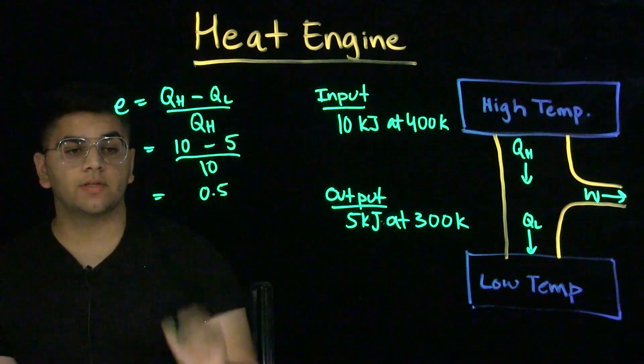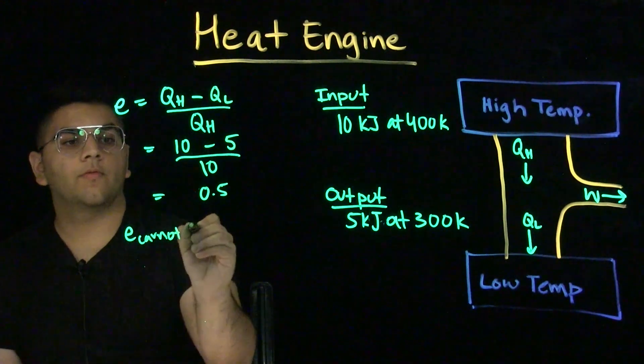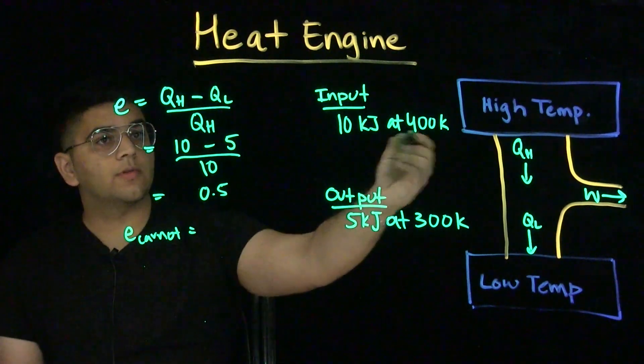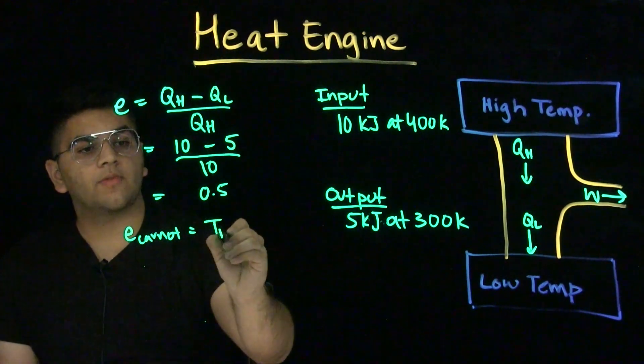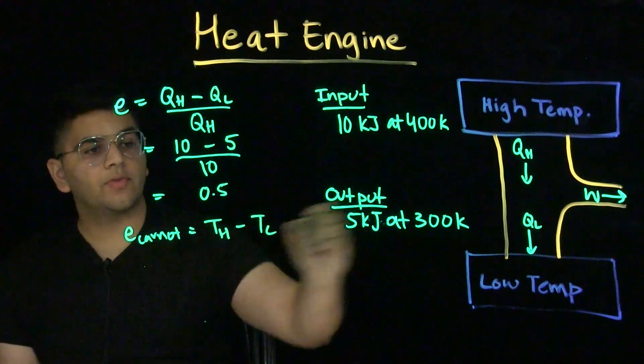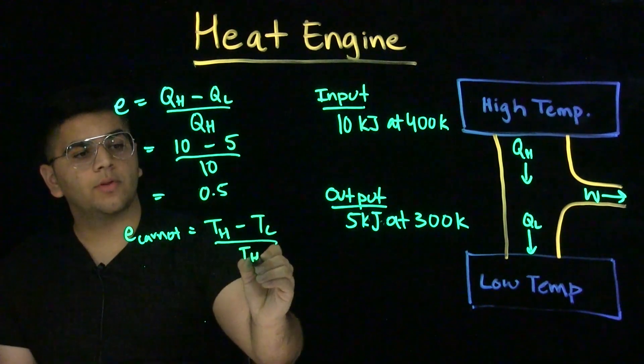Now, let's look at the Carnot engine efficiency. For the Carnot engine, we use the temperature. We do the first part, our high temperature environment at 400 Kelvin, a low temperature environment at 300 Kelvin over a high temperature environment temperature.